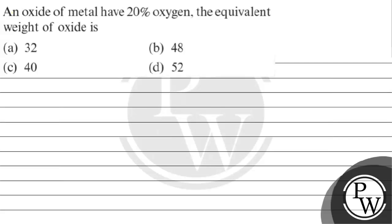Hello, let's read this question. The question is, an oxide of metal have 20% oxygen, right? The equivalent weight of oxide is option A 32, option B 48, option C 40, option D 52.